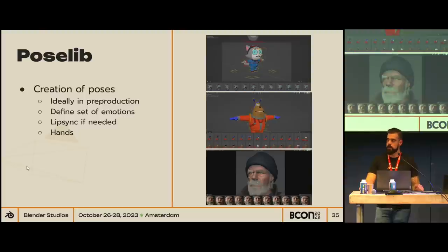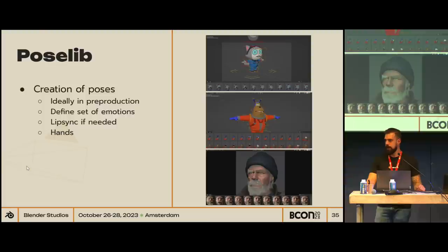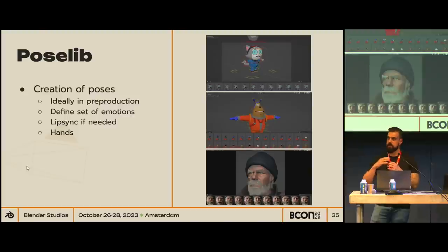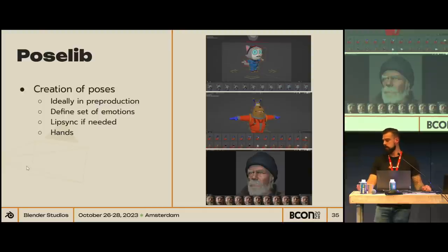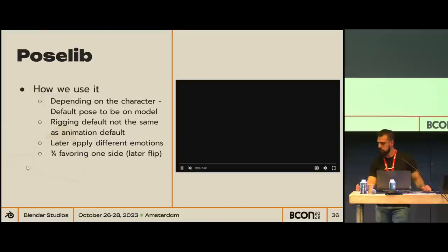The creation of poses ideally should happen in pre-production. How we do it is we define an extreme array of emotions — as far as we can go. So if we have a surprise, it's going to be a really big surprise; if it's a smile, a super big smile. Later it's easier to mix between different poses if you have more range to work with. We add lip sync if needed — most of our movies don't have any — and hands. Please put hands. It takes too much time to animate fingers.